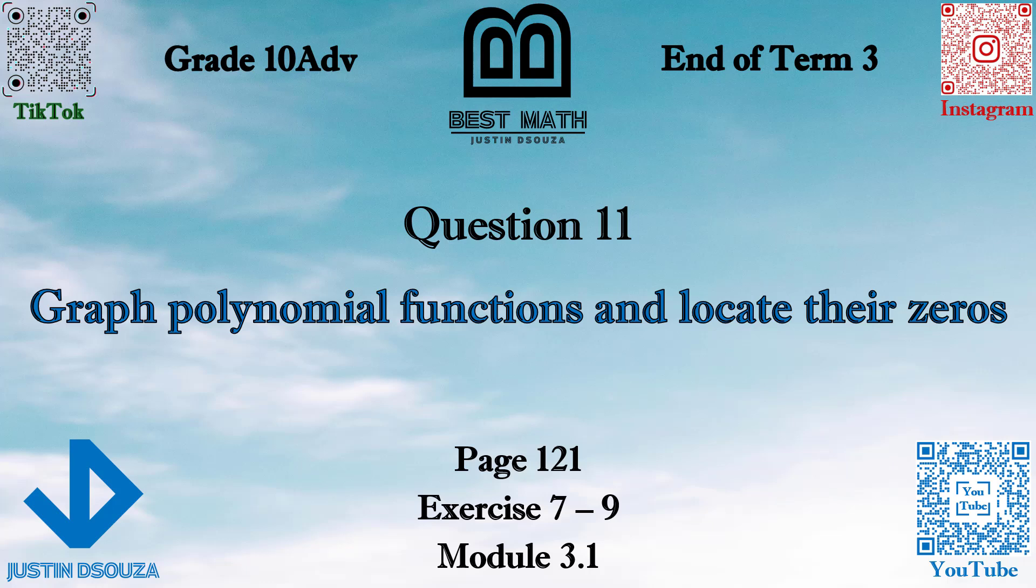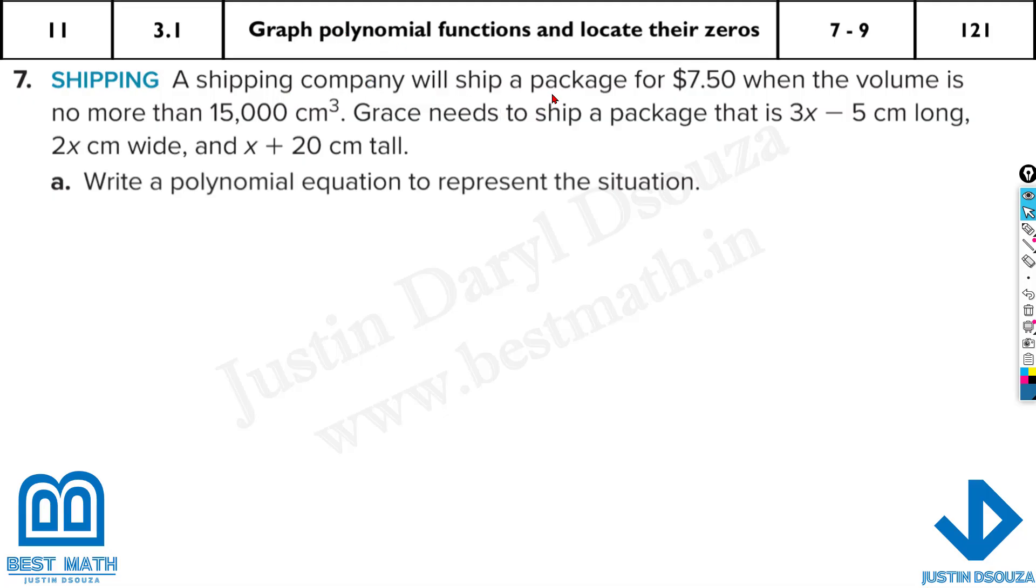In this question, we will write polynomial functions, graph them, and look at their zeros. Here we have a real-world problem. A shipping company will ship a package for $7.50 when the volume is no more than 15,000 cm³. So this is the maximum volume. Grace needs to ship a package that is 3x - 5 cm long, 2x cm wide, and x + 20 cm tall.